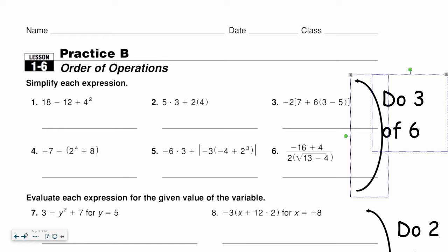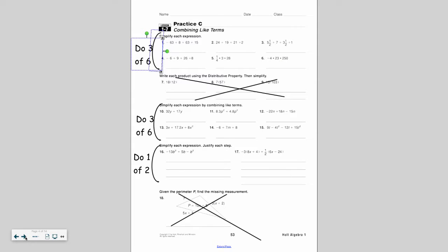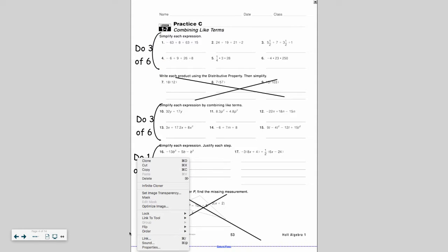For all these problems, remember to show your work. So I've split up the work here. So you're going to do three of the top six, two of those middle four, and then do both of those word problems. On the next page, again, do three of the six on top, three of the six on the middle, and then just do one of those 16 and 17, combining like terms.